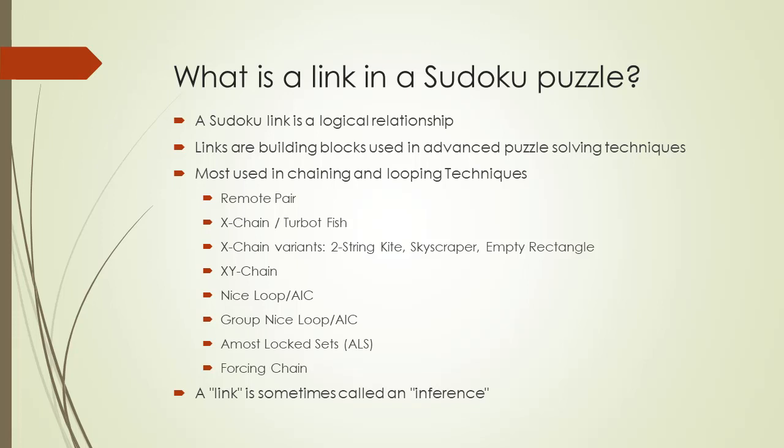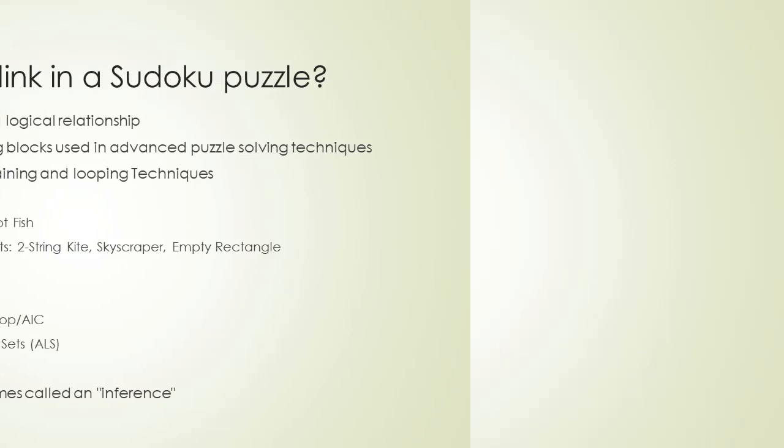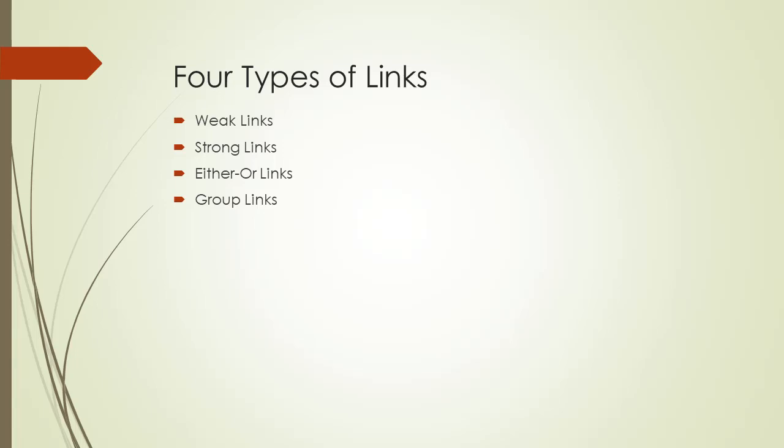The X-Y chain will be the next video in this set once I complete all the uniqueness videos. The next uniqueness video is Hidden Rectangle, in which I will use links in the explanation and reference this video. There are four types of links to be covered in this video. We will go through each one in great detail. Remember, a link is a logical relationship between two elements within a Sudoku puzzle.